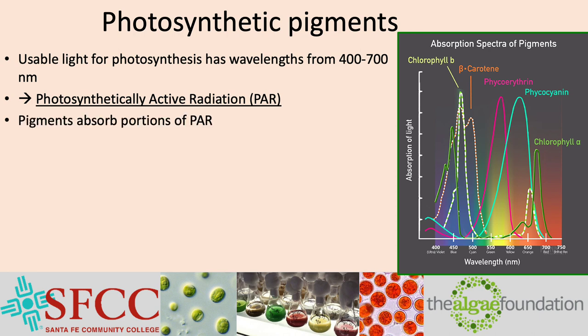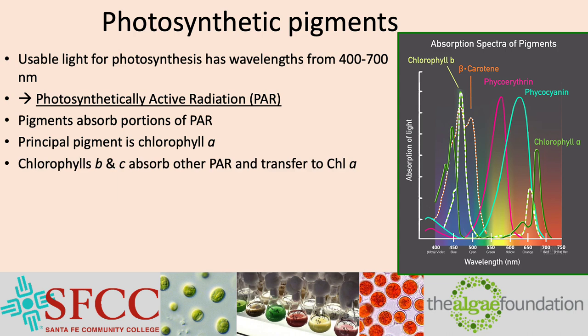Each of the pigment types absorbs energy in specific portions of the PAR spectrum. The principal pigment is chlorophyll A — it is found in all oxygen-producing algae, which includes all eukaryotic algae and cyanobacteria. Chlorophylls B and C absorb in other regions of the PAR in different types of algae and transfer the energy to the chlorophyll A molecules.